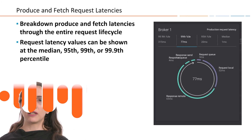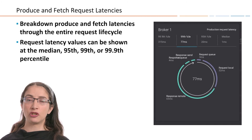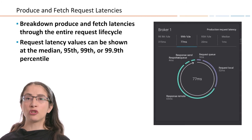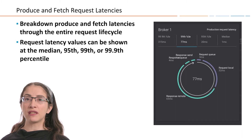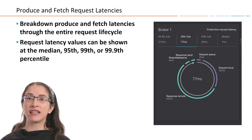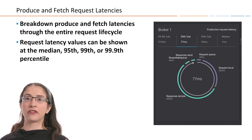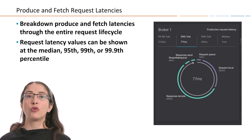The key dashboard you want to look at is the produce and fetch request latency breakdown. You get to it by clicking on the latency chart on the main system health dashboard. This shows you the lifecycle of every request so you can identify where time is spent — what is Kafka doing that makes this request processing slower than you'd like?